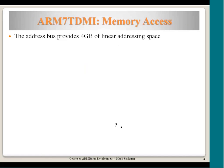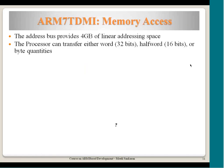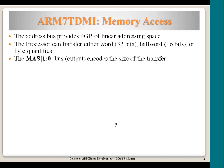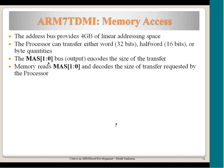The 32-bit address bus provides 4 GB of unique addressable memory. The processor can transfer word (32-bit), half-word (16-bit), or byte quantities, since the memory is byte-addressable. The MAS signal is a 2-bit output driven by the processor that encodes the size of the transfer. If the processor is transferring a half-word it puts the appropriate bit combination on MAS to indicate that to memory.